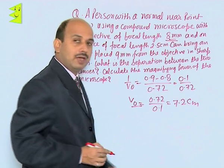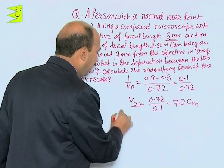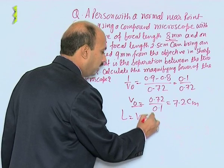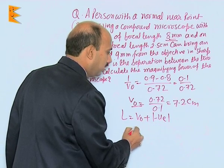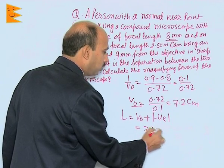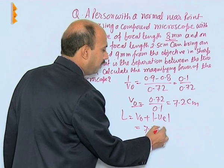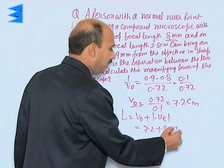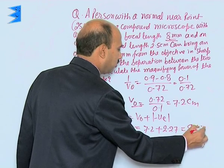We have got V naught, we have got U e. Now we can calculate L is equal to V naught plus U e, that is 7.2 plus 2.27, and it will be equal to 9.47.